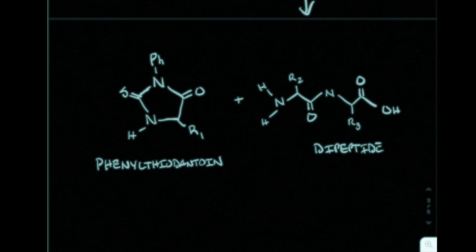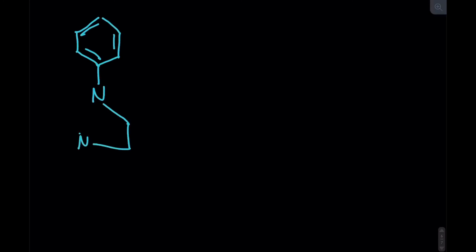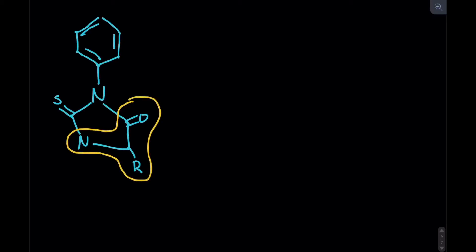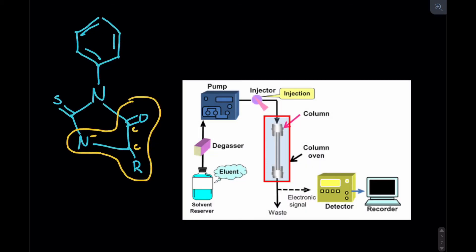We also obtain a phenylthiohydantoin molecule. This phenylthiohydantoin derivative contains a nitrogen-carbon-carbon backbone with an R group attached — the original N-terminus amino acid that was targeted and cleaved off in the beginning of the procedure. Once isolated, it can be identified using high-performance liquid chromatography. By using this technique, biochemists are able to identify the amino acid residue isolated, and by using a series of Edman degradations, the primary amino acid sequence of a protein can be determined.